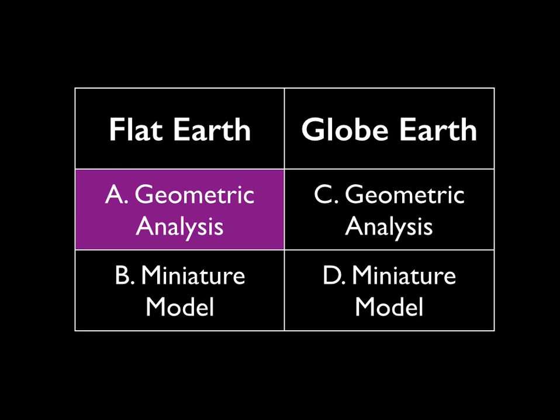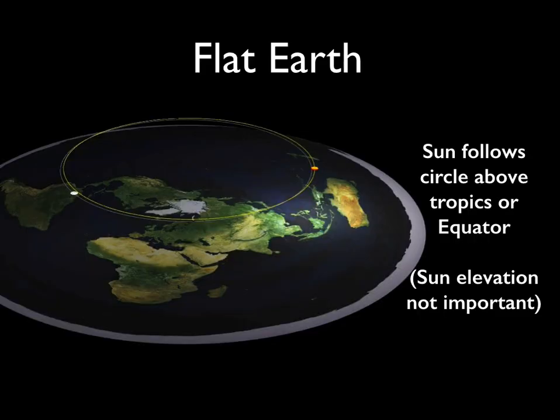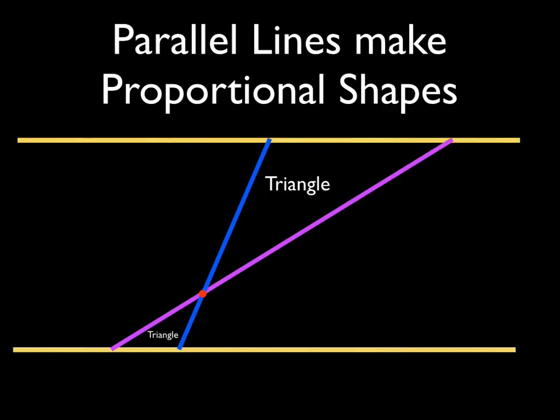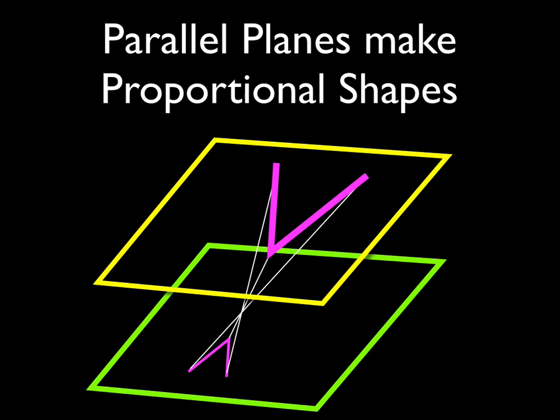Part A: geometric analysis of the flat Earth. On the flat Earth model, the sun follows a circle above the Tropic of Capricorn, circling the North Pole. And the sun elevation is not important. The sun is in a parallel plane to the plane of the Earth. Now, this is important. Because in geometry, parallel lines make proportional shapes. If you have two lines and they cross at that red dot, you make proportional triangles. Parallel planes do the same thing. They will also make proportional shapes.